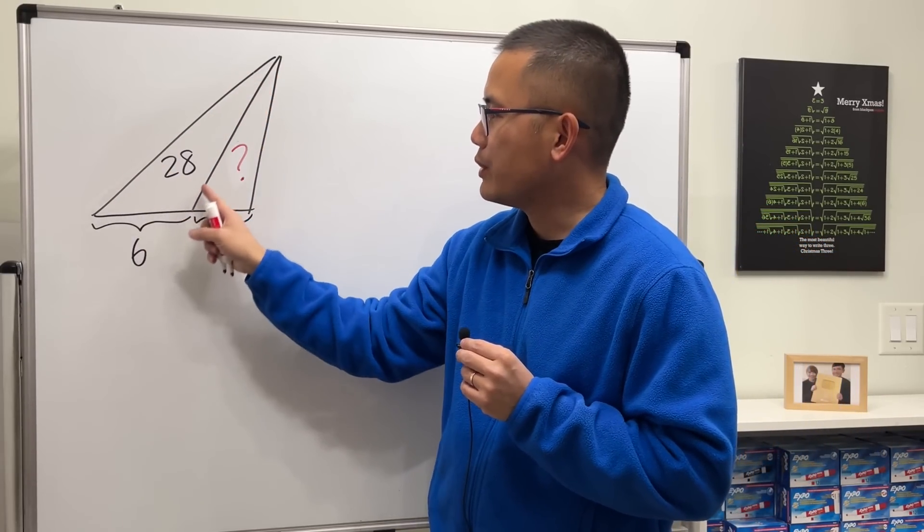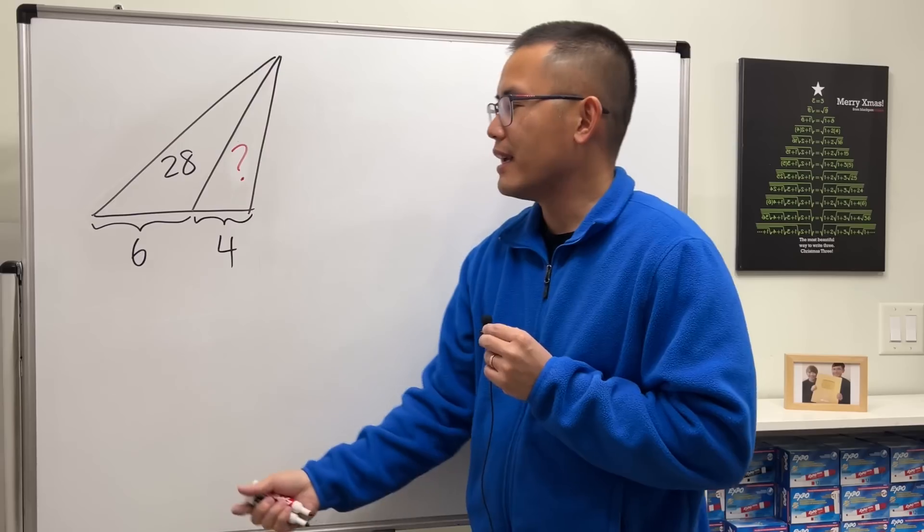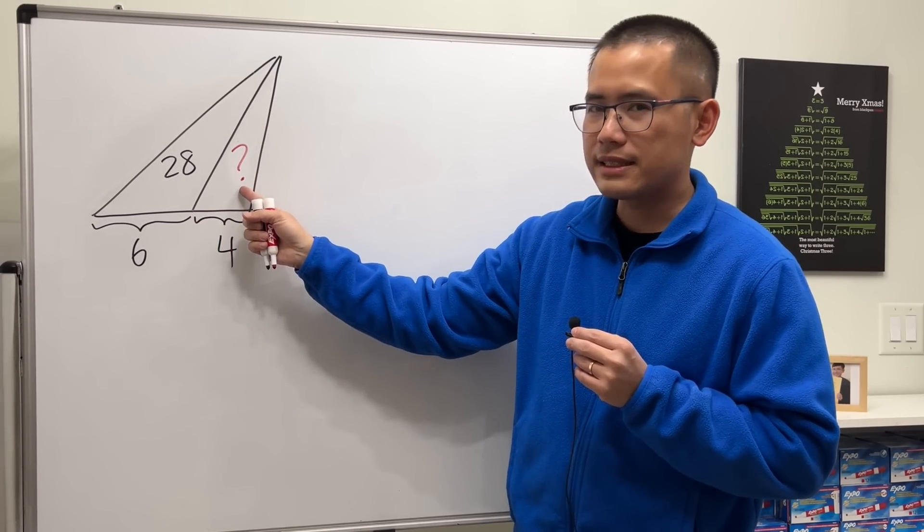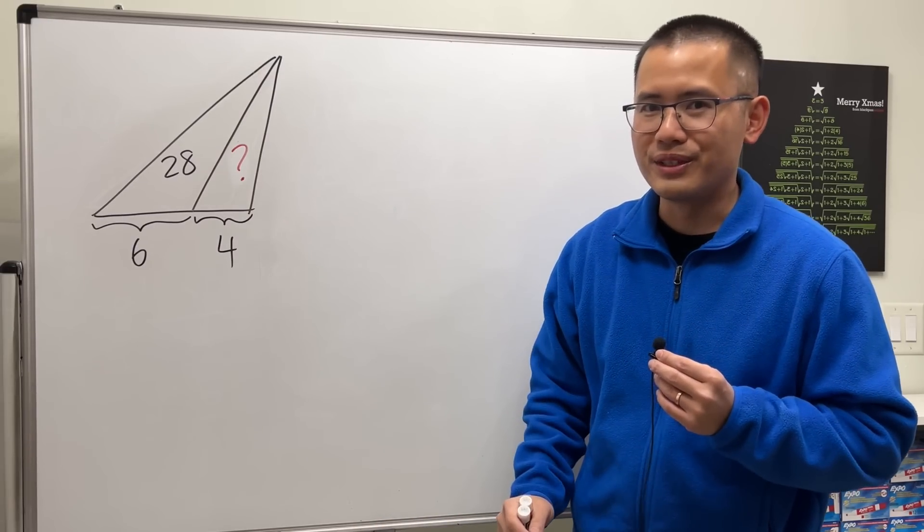We are given that this area here is 28 and this side here is 6. We also know that this right here is 4, and the question is asking us to find out this area here. So how do we do it?